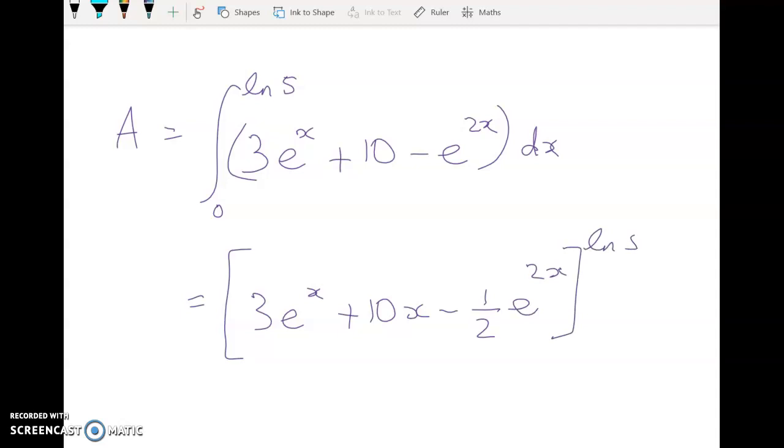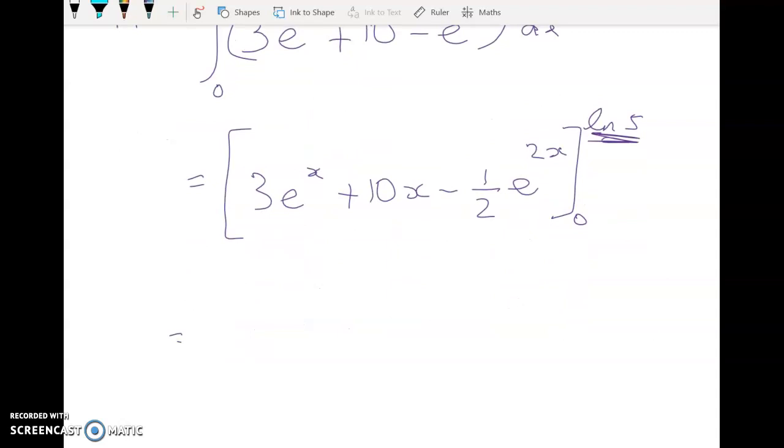And we have to evaluate it at these limits. Now you do have to be a bit careful with this one. Right, so let's go. We've got 3e to the log 5, plus 10 log 5, minus a half e to the 2 log 5. This is where we've got to be careful.